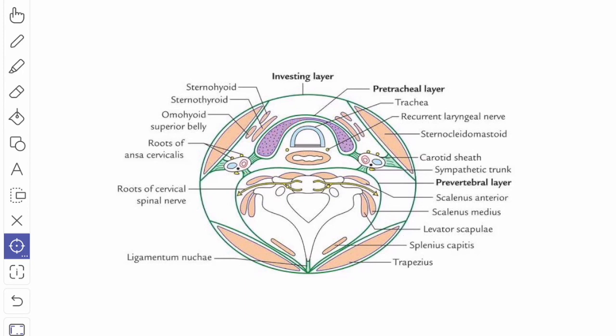This is the thyroid gland. It encloses the thyroid gland and passes in front of the trachea and becomes continuous with the opposite side similar fascia.